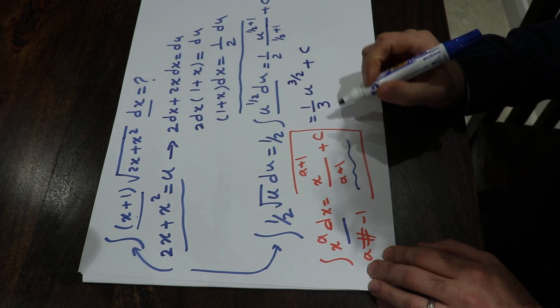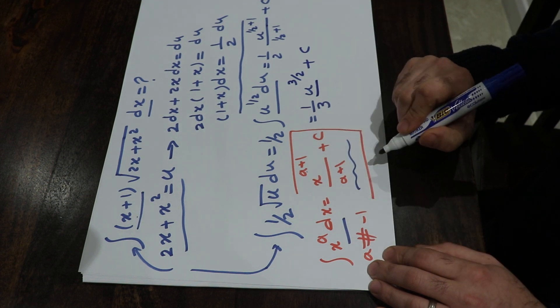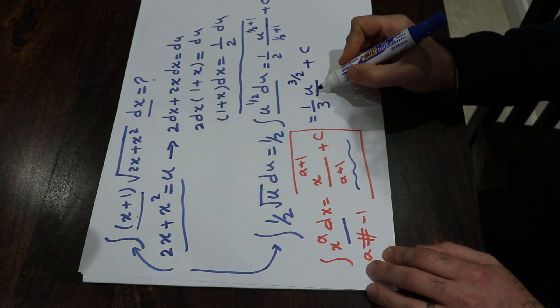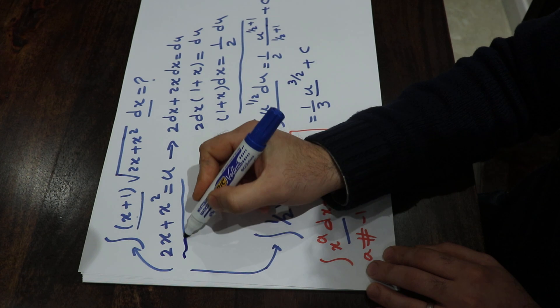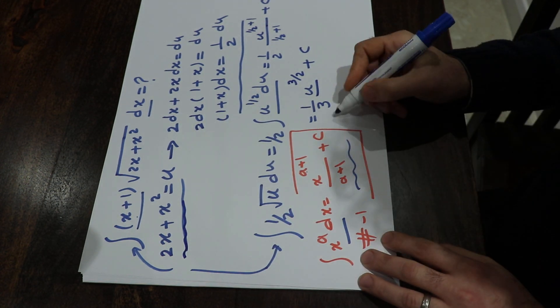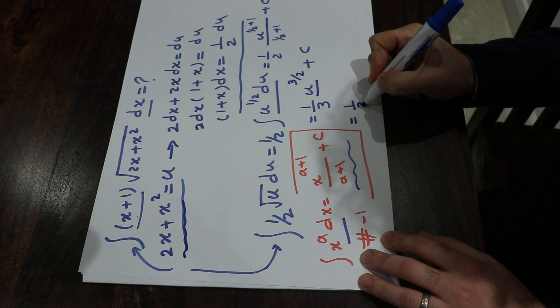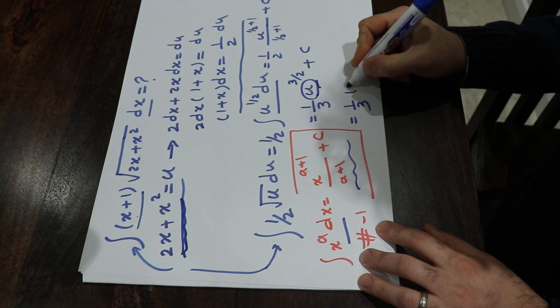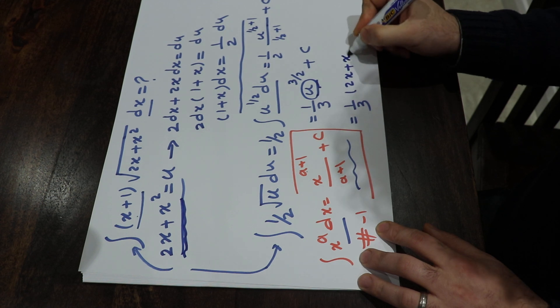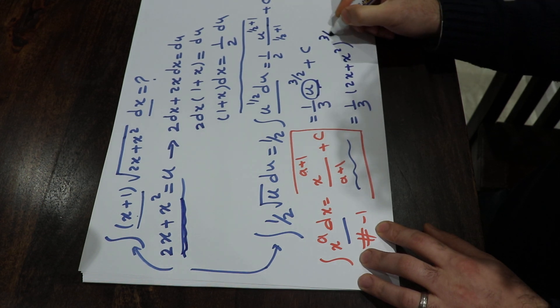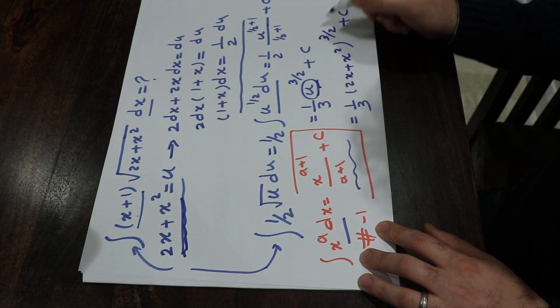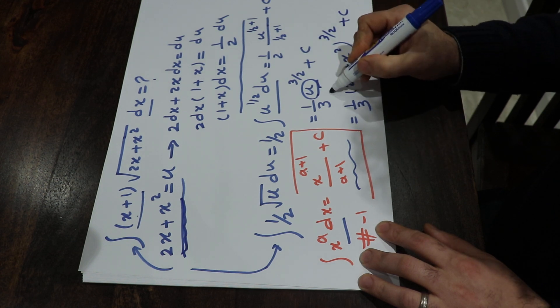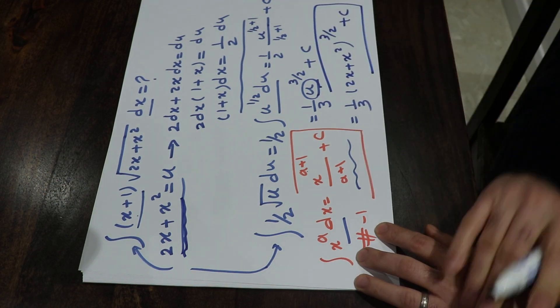At this stage, all you need to do is to change the parameter u or to substitute the parameter u by the function that you use at the beginning to define it. So that will be equal to 1 divided by 3. Instead of u, I put 2x plus x² with the power of 3 divided by 2 plus c. That's the constant of the integral. And that is the solution to our integral.